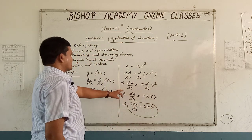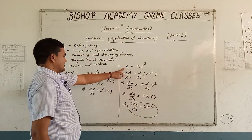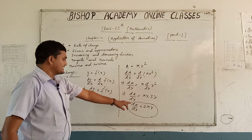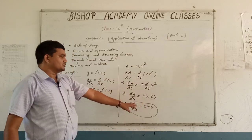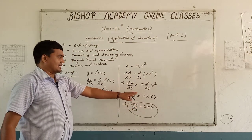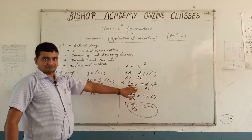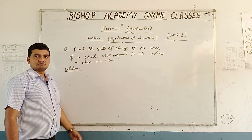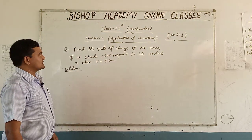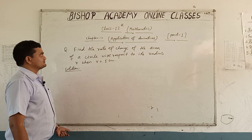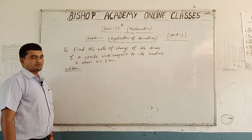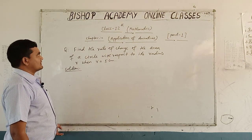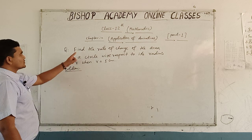So the rate of change of area with respect to radius is 2 pi r. Now we will solve some questions based on rate of change of a function.